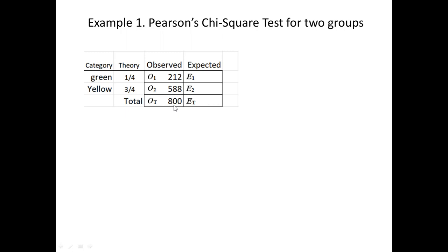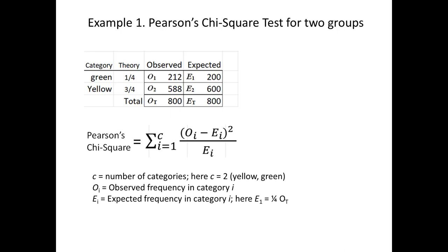We have a total of 800 peas: 212 were green and 588 were yellow. To generate the expected frequencies, we take 800 and calculate how many we'd expect to be green. We expect one-fourth of them to be green, so one-fourth of 800 is 200. The other expected value is 600 by subtraction. Pearson's statistic looks like this: take the observed frequency minus the expected frequency for a category, square that number, divide by the expected, and do that for each category. Add them up and we have Pearson's chi-square statistic.